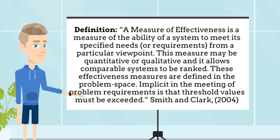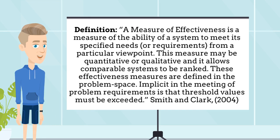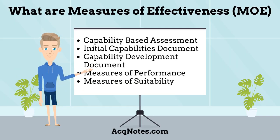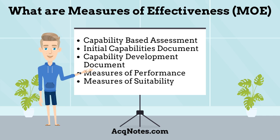This measure may be quantitative or qualitative, and it allows comparable systems to be ranked. These effectiveness measures are defined in the problem space. Implicit in the meeting of problem requirements is that threshold values must be exceeded. In the defense acquisition process, the capability-based assessment defines the measures of effectiveness and articulates them into the Initial Capabilities Document and Capabilities Development Document. Measures of Effectiveness may be further decomposed into measures of performance and measures of suitability, which we will address later in this tutorial.